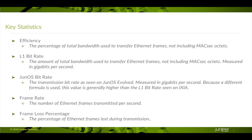Before we get to the demo, we need to set some common background and nomenclature. There are five important statistics to look at. First, efficiency — the percentage of the 400G bandwidth used to transfer Ethernet frames, but not including MaxSec octets. The Layer 1 bit rate is the amount of the 400G bandwidth in gigabits per second used to transfer the Ethernet frames, again not including the MaxSec octets.